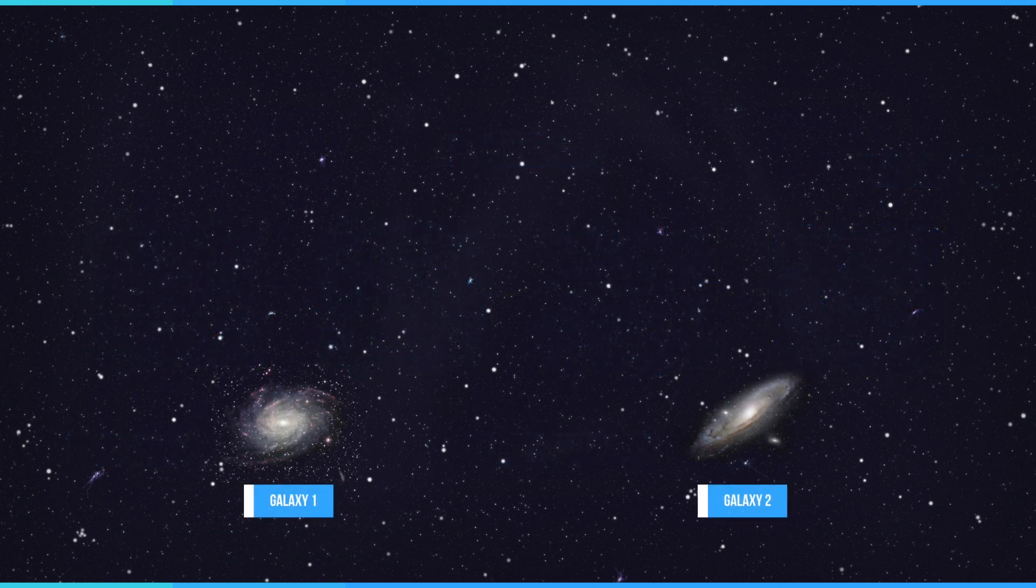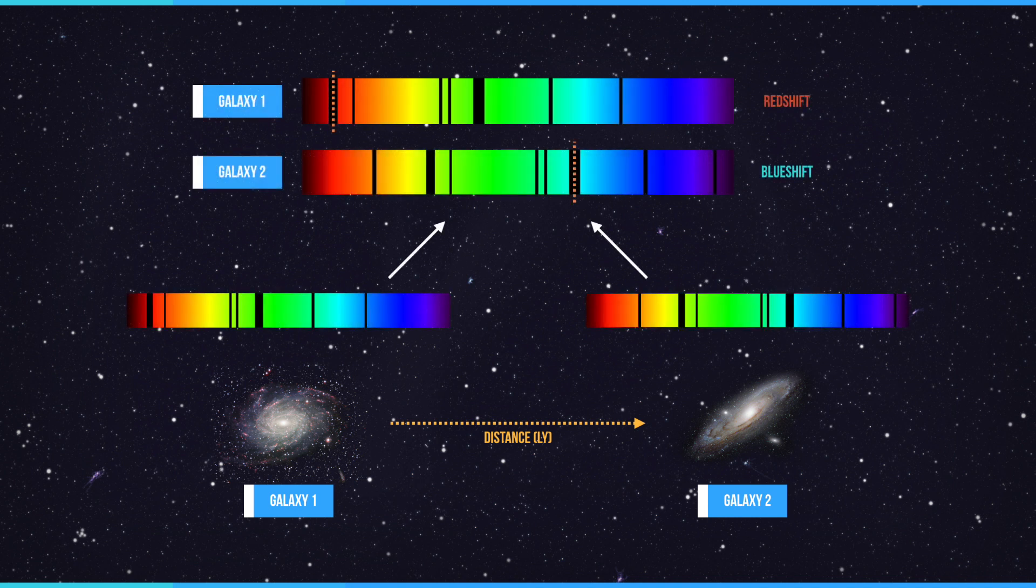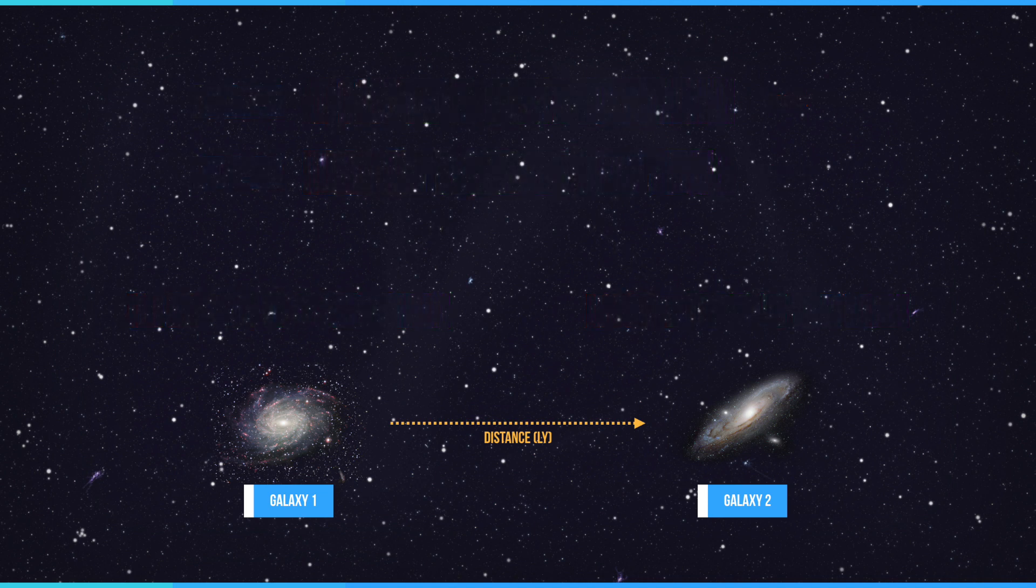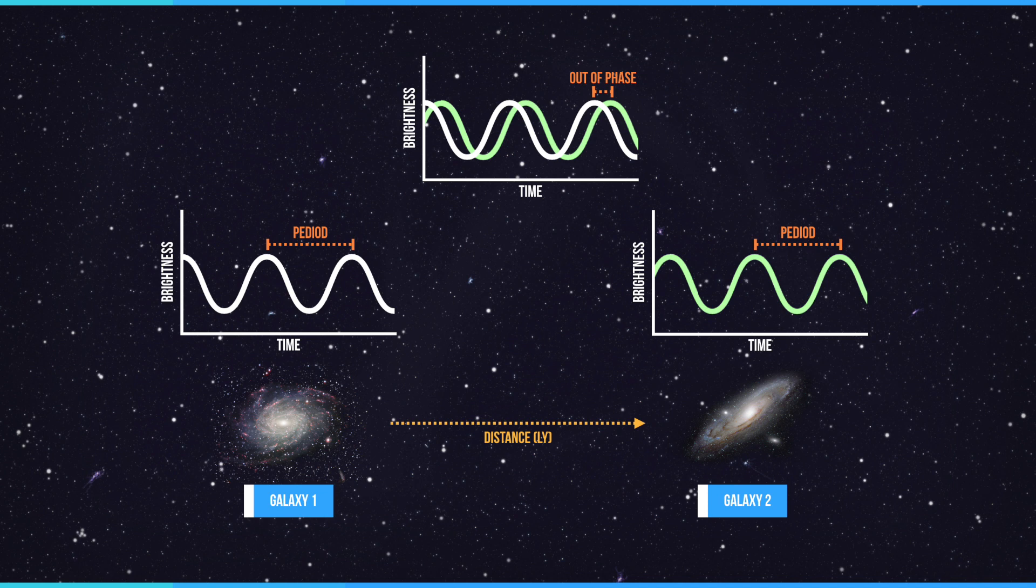The distances to the various members of the local group can be determined by measuring redshift, where the light from galaxies that are moving away appears to have longer wavelengths. Another method is variable stars. This pattern of fluctuating intensity allows astronomers to calculate their intrinsic brightness, allowing their distance to be calculated.